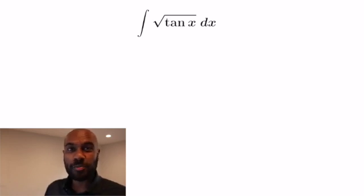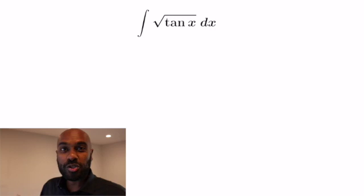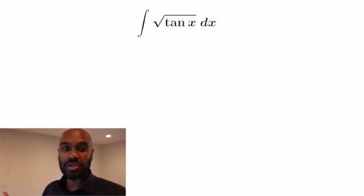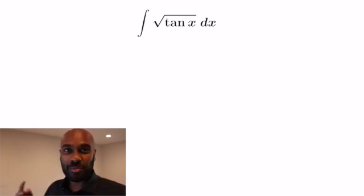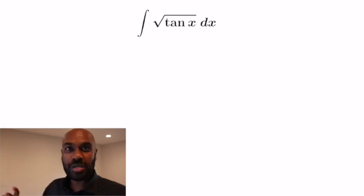Imagine you were given the task of computing the following indefinite integral. One thing you could try is a substitution like u equal to tan x, and you quickly realize the thing you're left with isn't nice to integrate. Or you could try integration by parts, and you quickly get into trouble as well. In this video we'll see how to compute this integral using a really cool symmetry argument where we interchange sine and cosine.